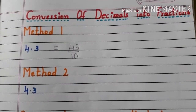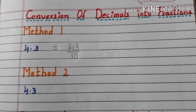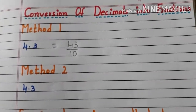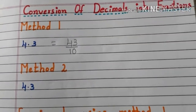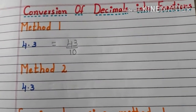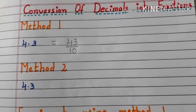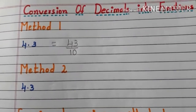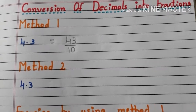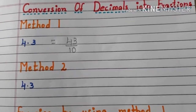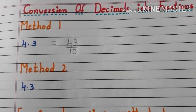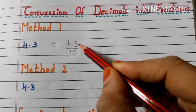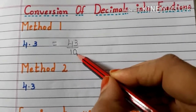For example, if there are two digits after the decimal point, we have to write 100 in the denominator. Or else, if there are three digits after the decimal point, we have to write 1000 in the denominator. Like that. Now we have the fraction 43 by 10.